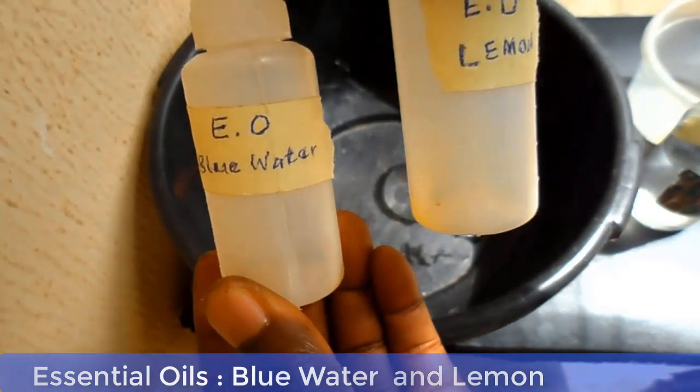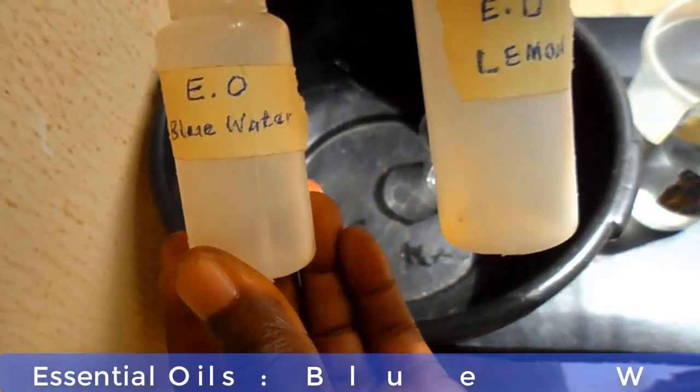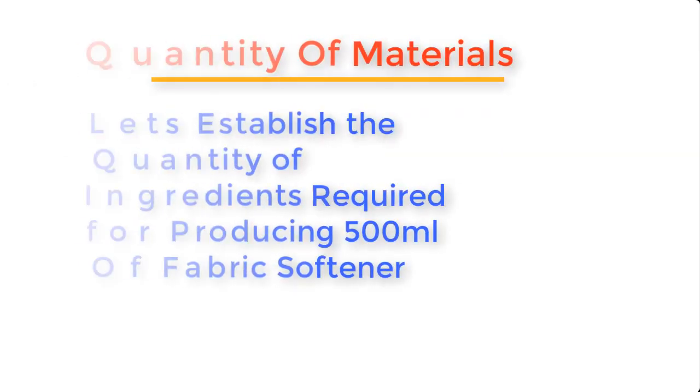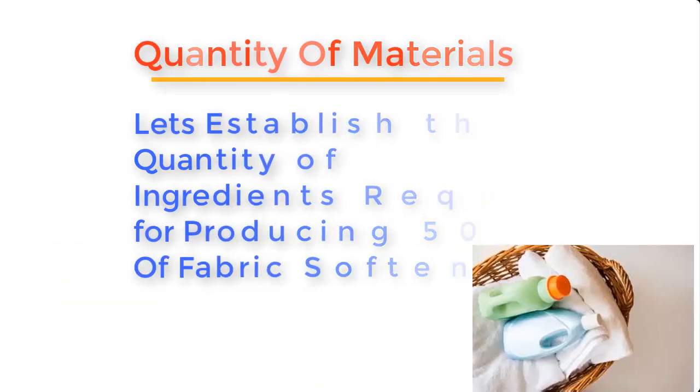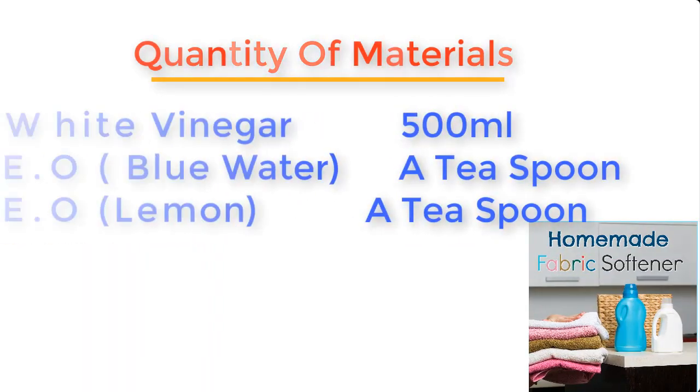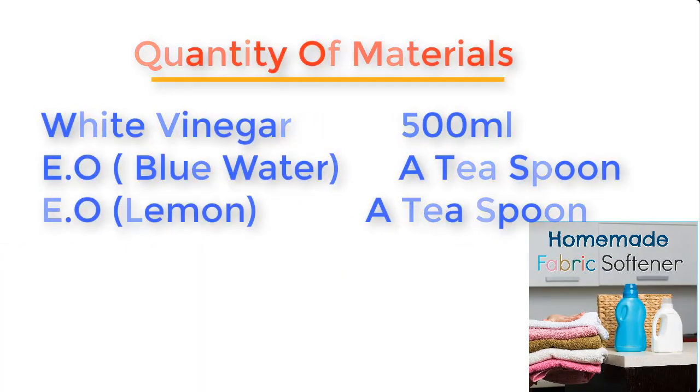Now, before we begin mixing, let's establish the quantities of ingredients we will require for producing 500 ml of fabric softener. You'll need 500 ml of white vinegar, a teaspoon of blue water essential oil, and a teaspoon of lemon essential oil.